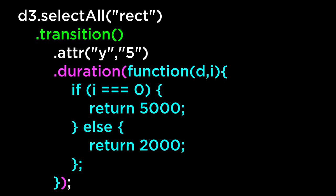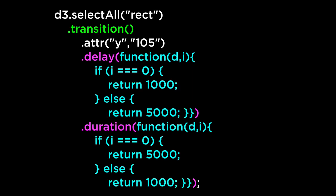In the duration example, we select all rectangles on the page. A duration is defined for each element: if the rectangle selection element index is zero, a location position transition animation will occur for five seconds; if the index is something else, it will occur for two seconds. In the combined example, both delay and duration are applied: if the index is zero, the rectangle will wait one second before moving and take five seconds to complete the transition; if the index is not zero, the rectangle will wait five seconds before moving and then take one second to complete the transition.